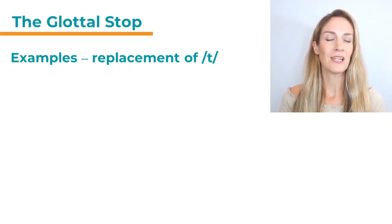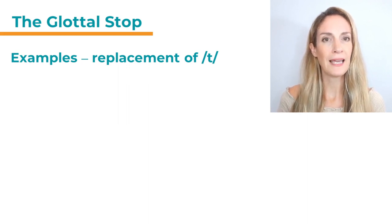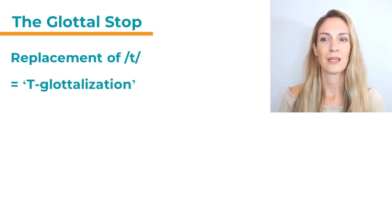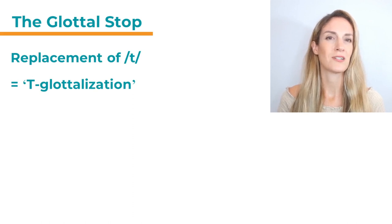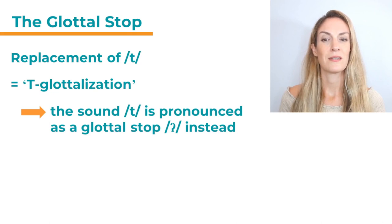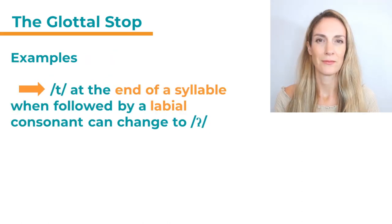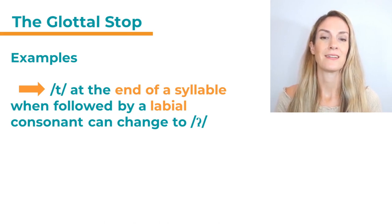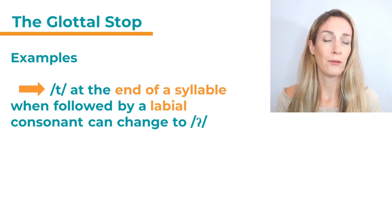Very often we have a glottal stop to replace another plosive — the unvoiced T sound. This is also called T-glottalization. The sound T is pronounced as a glottal stop instead. This happens when the T is at the end of a syllable and is followed by a labial consonant — a sound that involves either both lips or just one of the lips in the articulation.